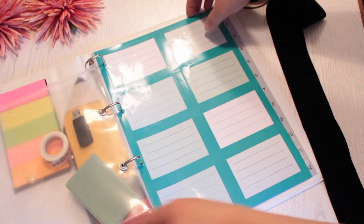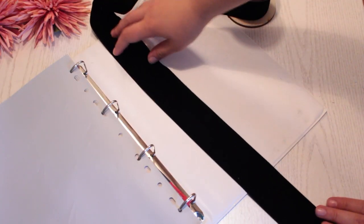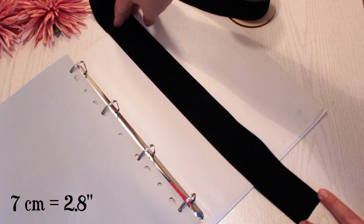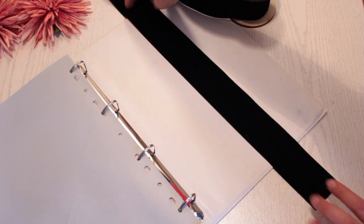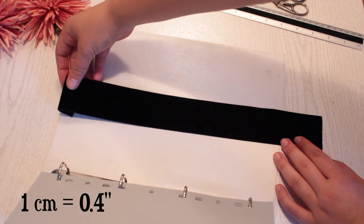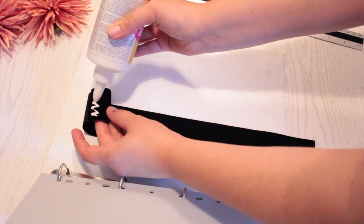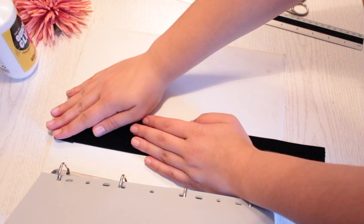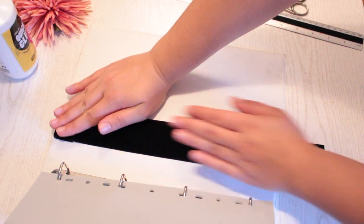Now go to the back of the binder and measure out a piece of ribbon that's 7 centimeters longer than your binder. Cut your piece of ribbon off, then fold 1 centimeter inwards, put some glue on the fold and glue it right onto the binder. Press down to make it stick properly.